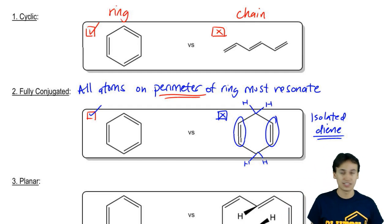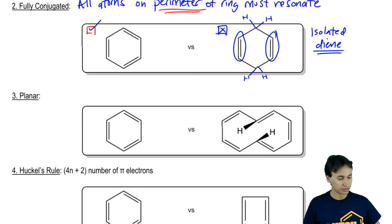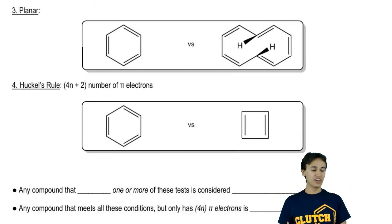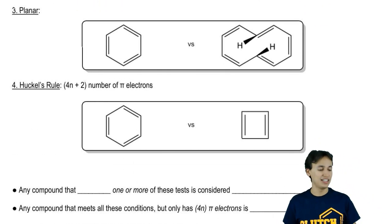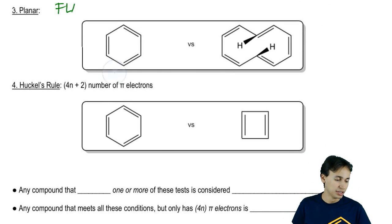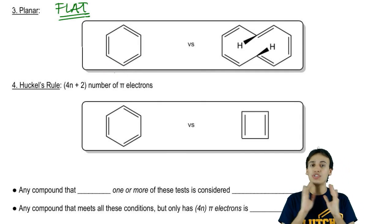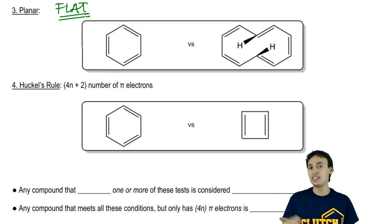Let's move on to the third test. It takes more than those two. So planar just means it needs to be flat. Planar is its own topic. We're going to be discussing more in depth on how to figure out all of these different types of parameters. But for right now, you can assume that any ring will be planar unless shown otherwise.